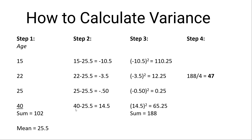In step three, now that I've got these differences, I'm going to square them. So for instance that 10.5 — which is the difference between the age and the mean — I'm going to square it, and I'm going to do that for responses two, three, and four. Then I'm going to sum all of these squared differences. Step four: I'm going to take that sum of squared differences and divide by the total number — essentially getting the mean of those squared differences.